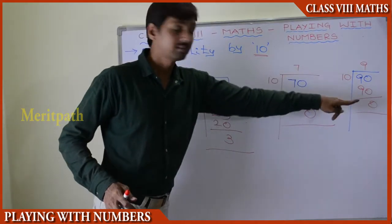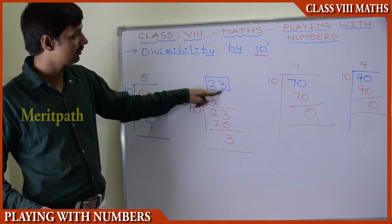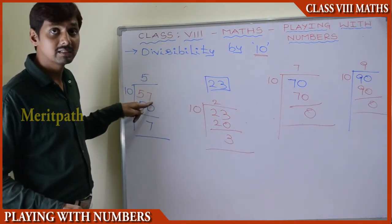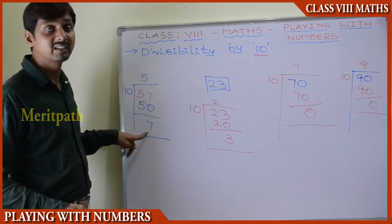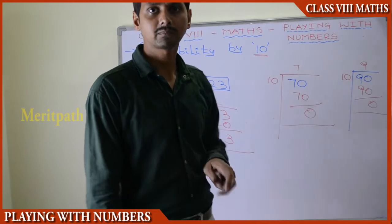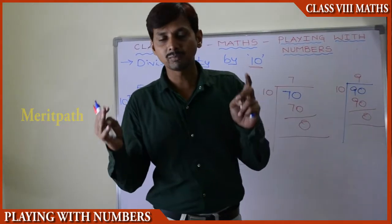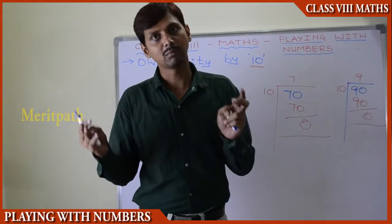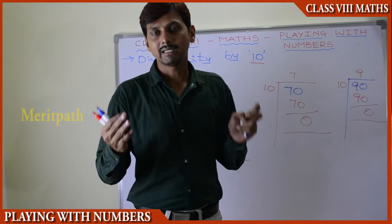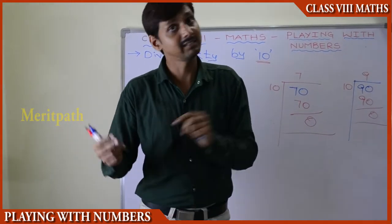The number 70 is divisible by 10 because its units place is 0. The number 23 is not divisible by 10 because its units place is 3. The number 57 is not divisible by 10 because its units place is 7. So any number having units place 0 is divisible by 10, and any number having a unit digit other than 0 is not divisible by 10.